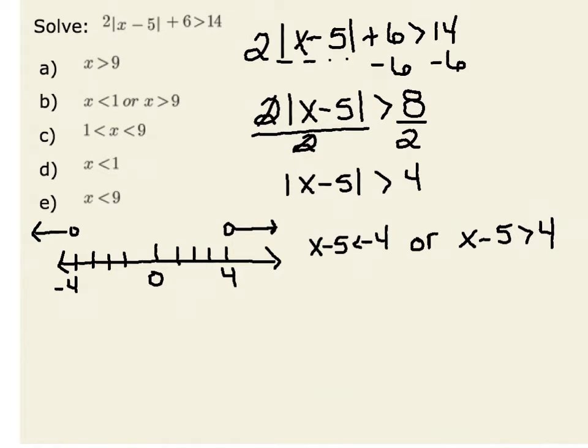Now I have two linear inequalities, and I can solve for each one of them. If I solve x minus 5 is less than negative 4 by adding 5 to both sides, I result in the inequality that x has to be less than 1. So any number less than 1 would satisfy our absolute value inequality.